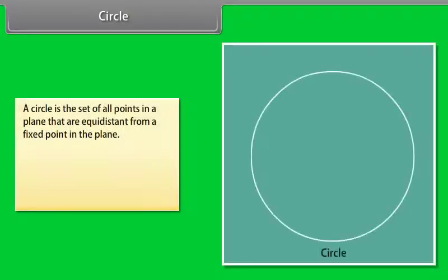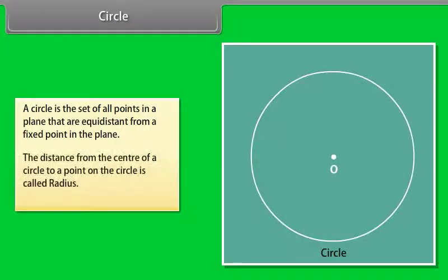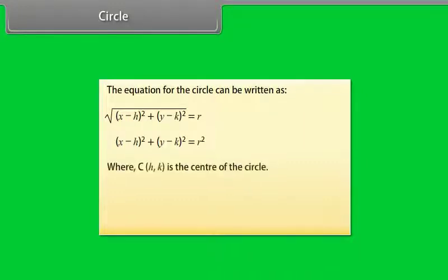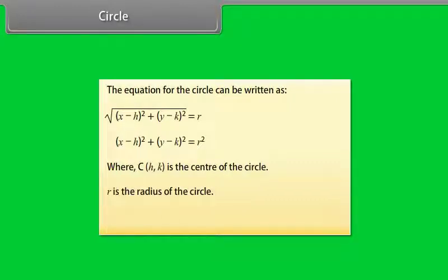Circle. A circle is the set of all points in a plane that are equidistant from a fixed point in the plane. The distance from the center of a circle to a point on the circle is called radius. The equation for the circle can be written as (x - h)² + (y - k)² = r², where (h, k) is the center of the circle, r is the radius, and (x, y) is a point on the circle.